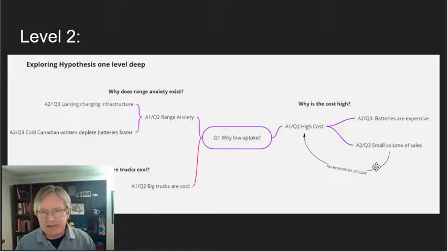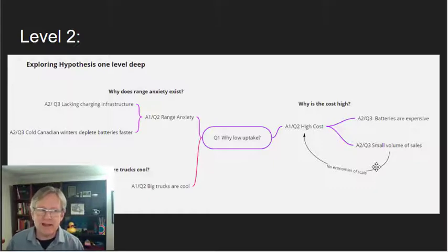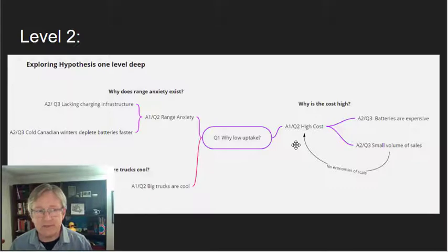On the big trucks are cool, we discover we don't really know why big trucks are cool. That calls for further research. Over on the right hand side of our diagram, we see that the cost is high, we begin to explore it, the batteries are expensive, or perhaps it's because of the small volume of sales, which results in low economies of scale, and in turn high cost. Sort of a circular economic argument that probably doesn't give us much solutions if we dig in. So let's take a look at the batteries are expensive.